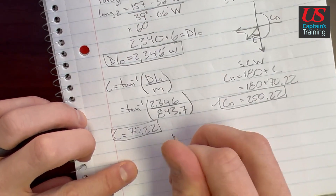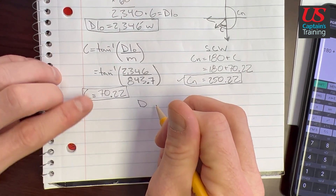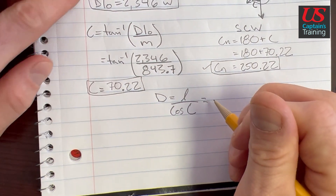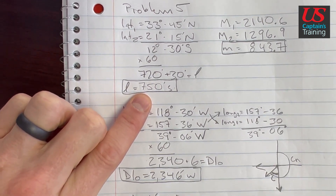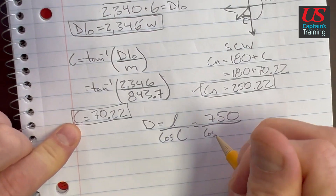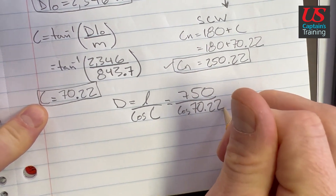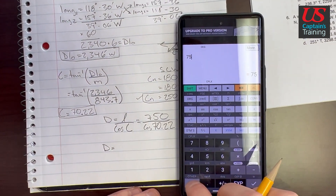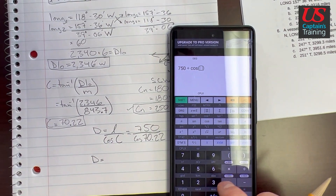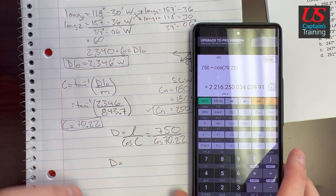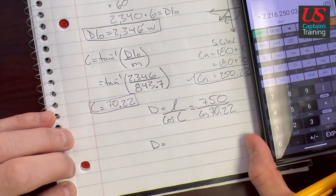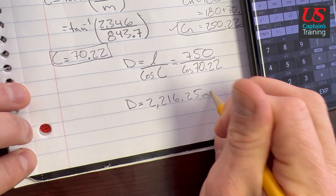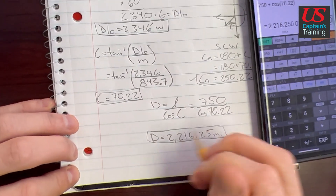Now let's find distance D. Distance is equal to little l over cosine C. So distance equals 750 over cosine of 70.22. That equals 2216.25 miles. This should also be in the answer choices.